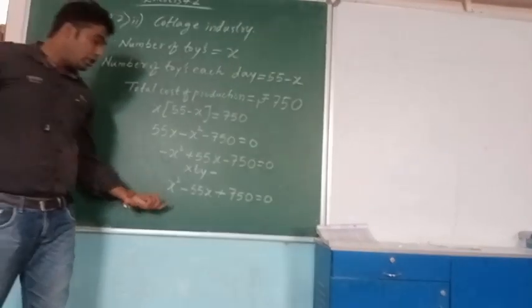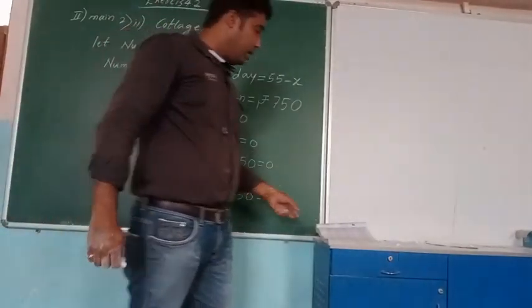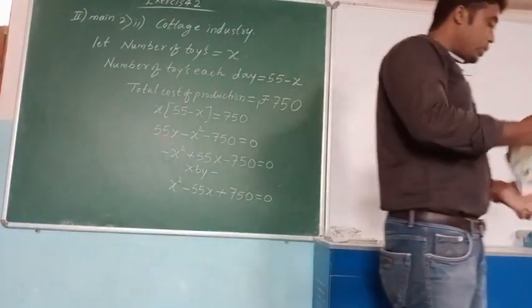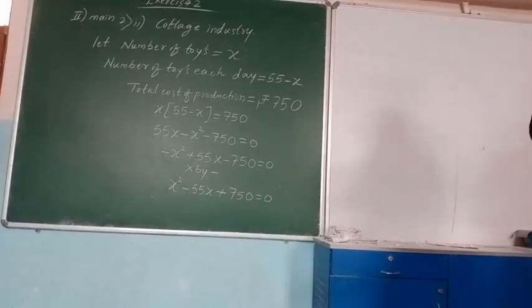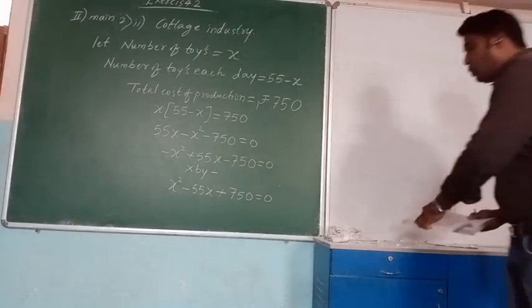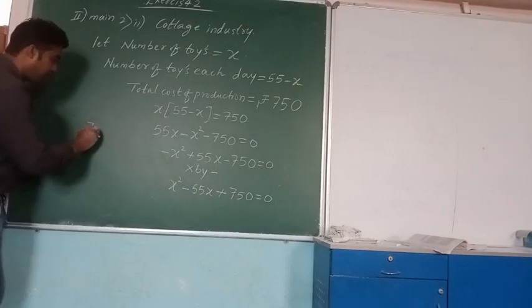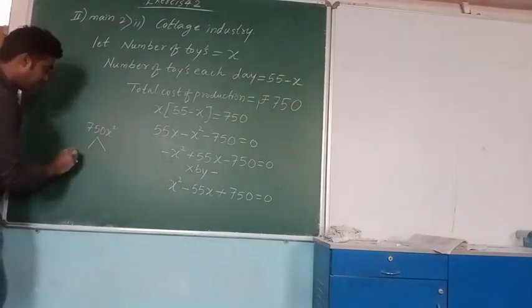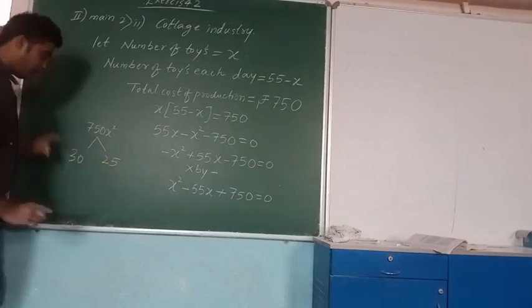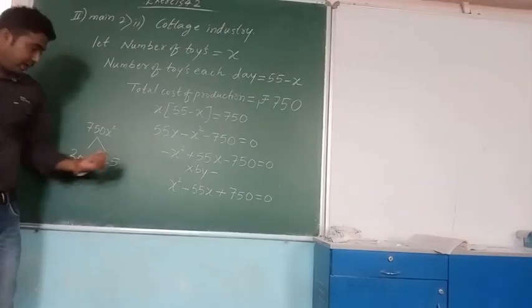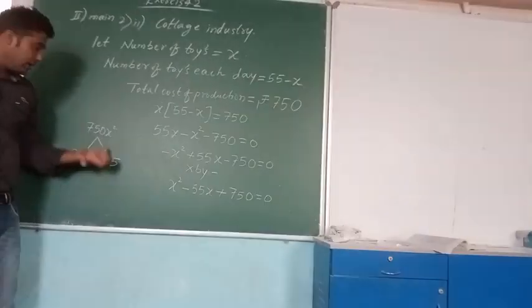We need to find the roots. You can apply the quadratic formula, or you can use simple factorization. I am going to use simple factorization. The factors of 750 — we need two numbers that multiply to 750 and add to 55. I will take 30 and 25. If you multiply 30 and 25 you get 750, and 30 plus 25 equals 55.